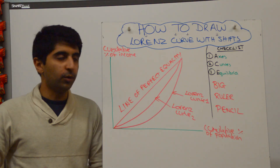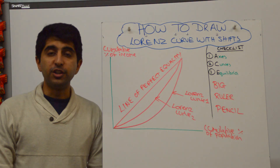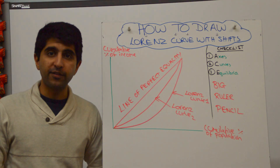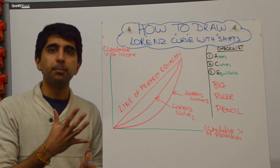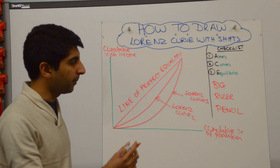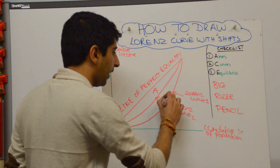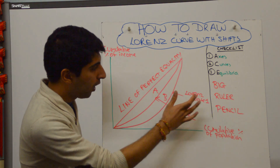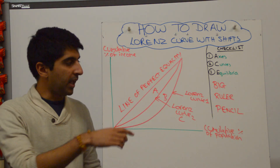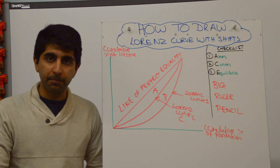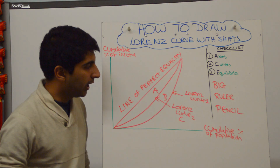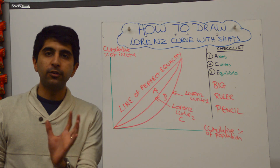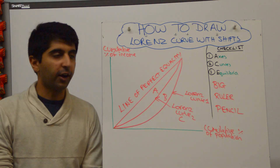So, really simple — that is all you need to do. You can also show the Gini coefficient on here, which is just the distance between the Lorenz curve and the line of perfect equality divided by the total distance beneath the line of perfect equality. If I put some labels on here — A, B and C — for Lorenz curve 1, the Gini coefficient would be A plus B divided by A plus B plus C. For Lorenz curve 2, it would be A divided by B plus C. You can also show how to measure the Gini coefficient by using a Lorenz curve diagram like this.